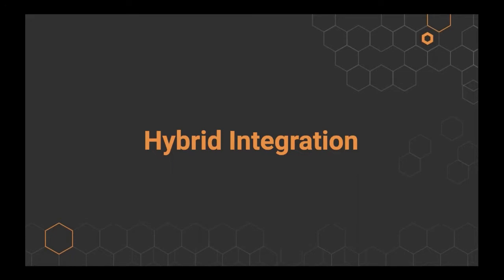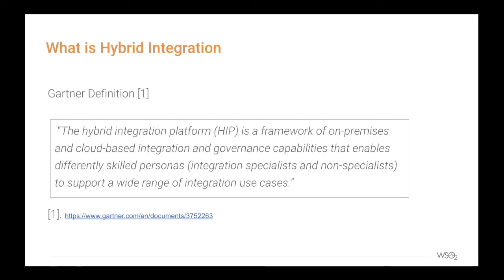Now let's move on to hybrid integration. The Gartner definition specifies the elements a platform needs to fulfill to become a hybrid integration platform. Specifically, it needs to integrate on-premise and cloud-based applications together, and it should serve different personas — from integration specialists to citizen integrators, meaning your business users can really benefit from that platform.